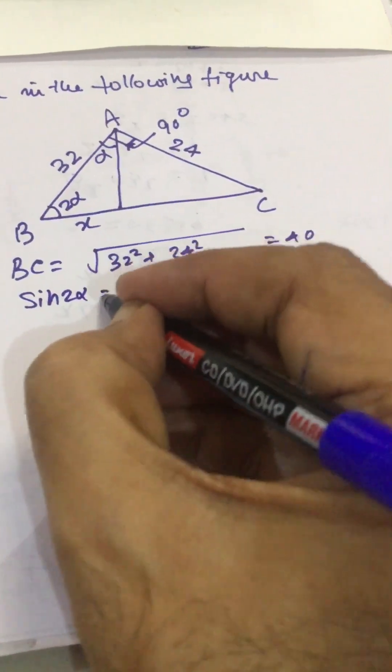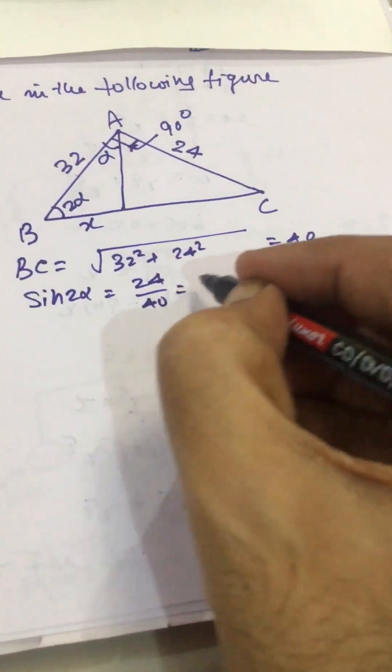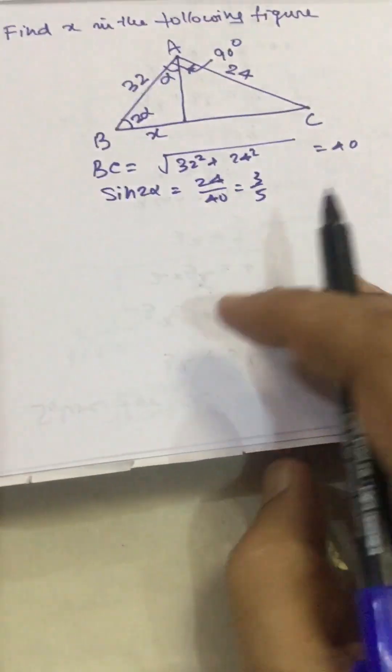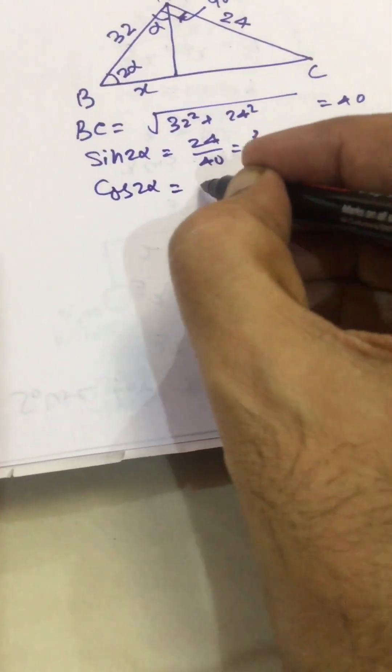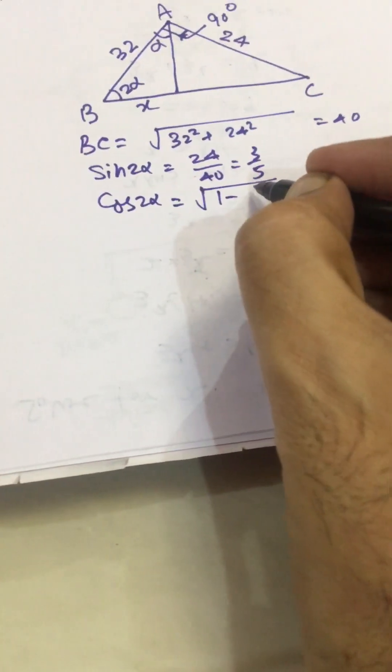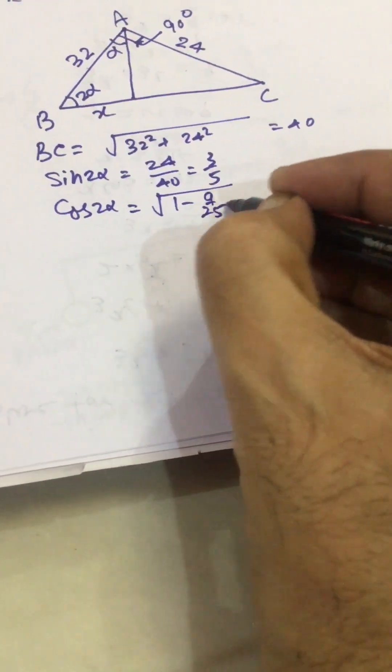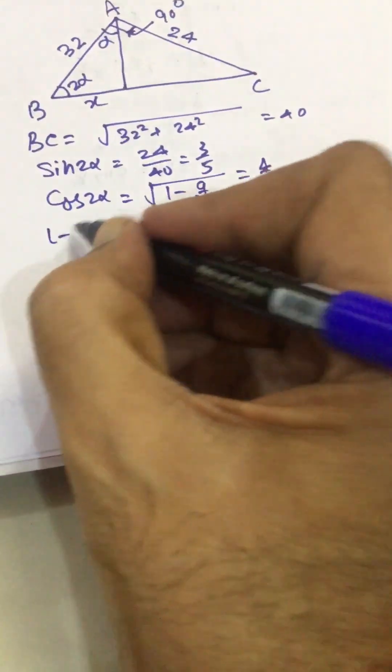So here we can write sin 2α equal to 24 divided by 40, 3 by 5. Cos 2α equal to square root of 1 minus (3/5)² that is 9/25, equal to 4/5.